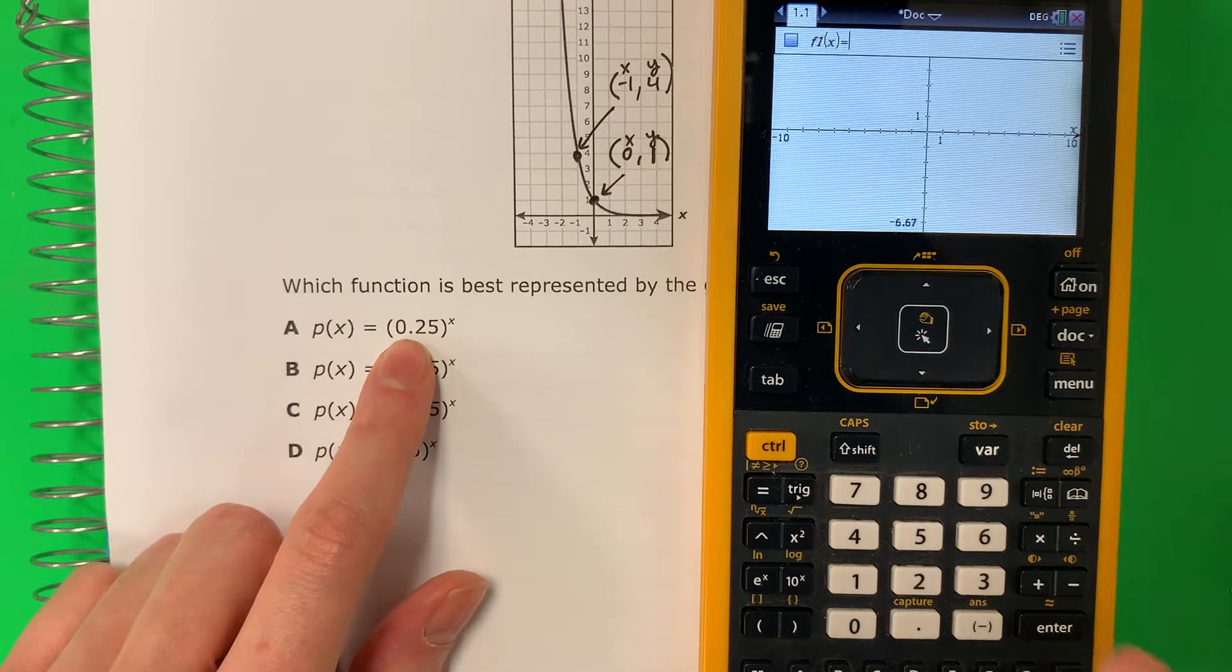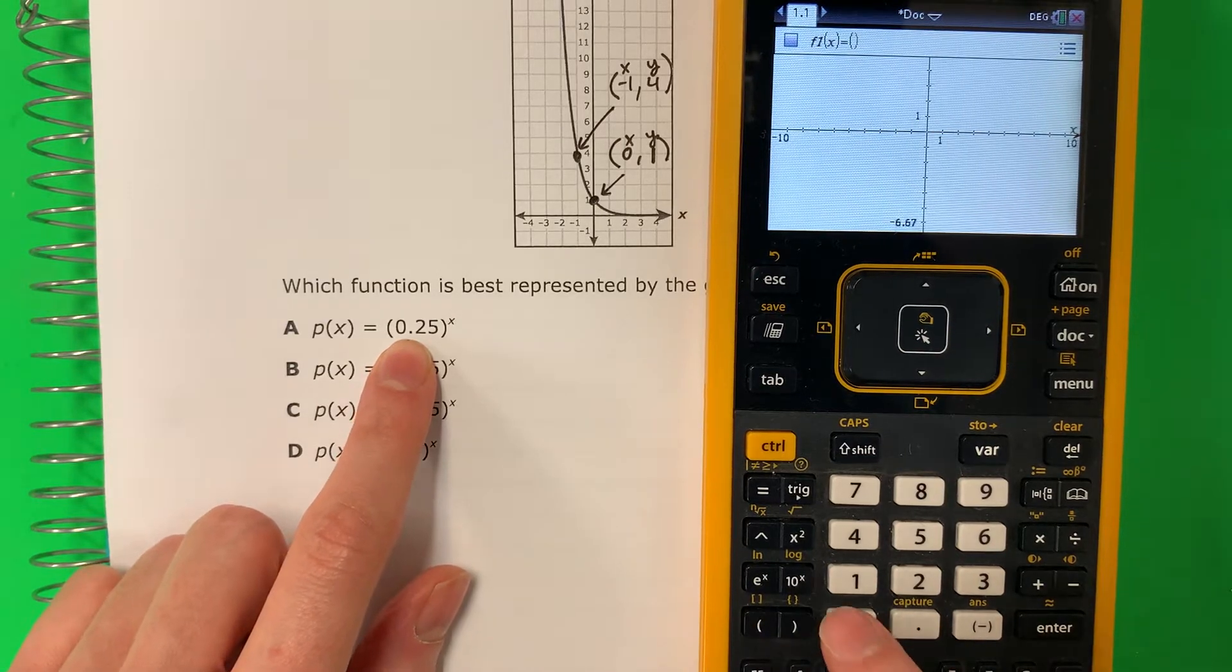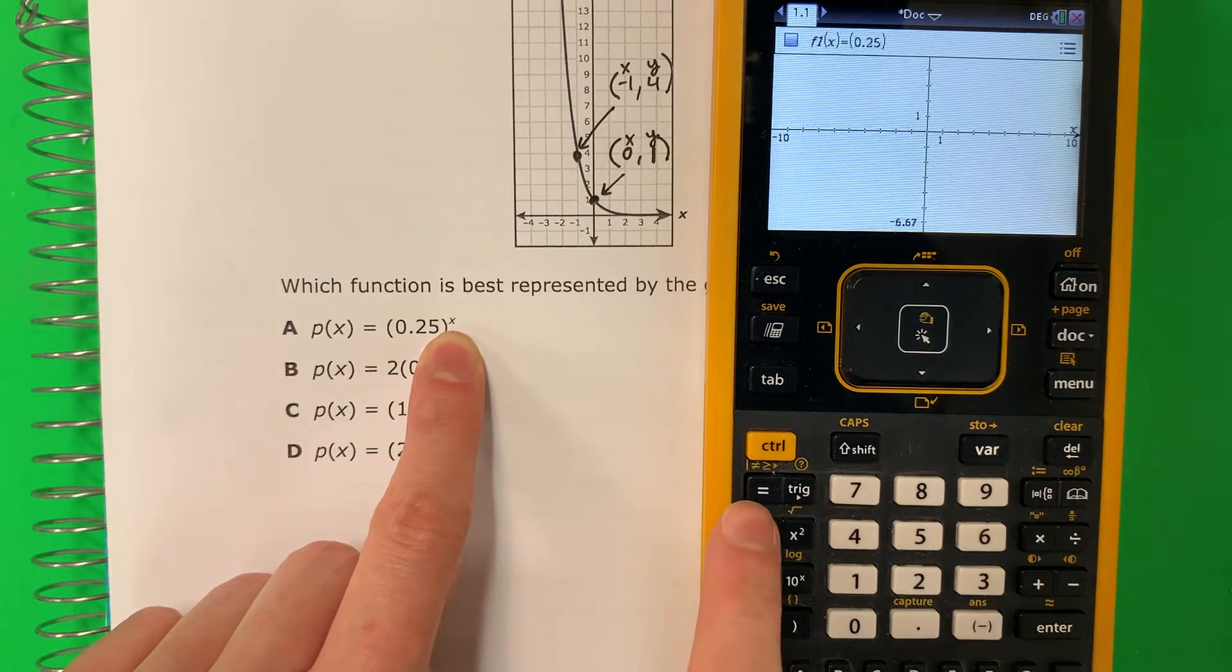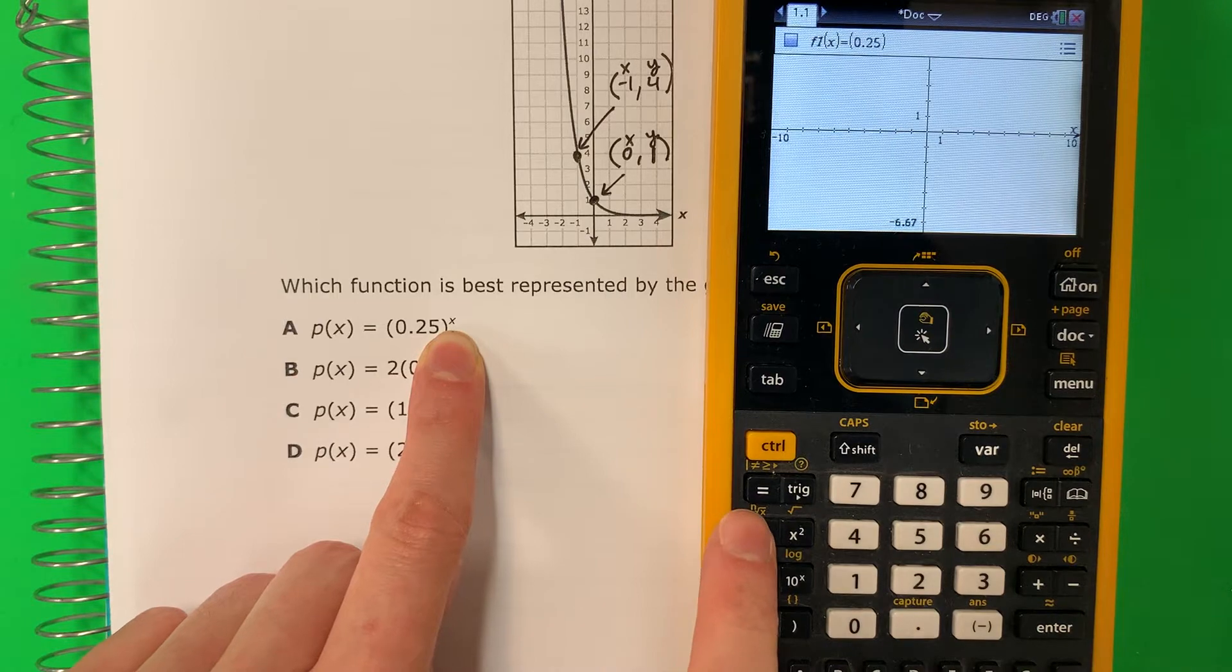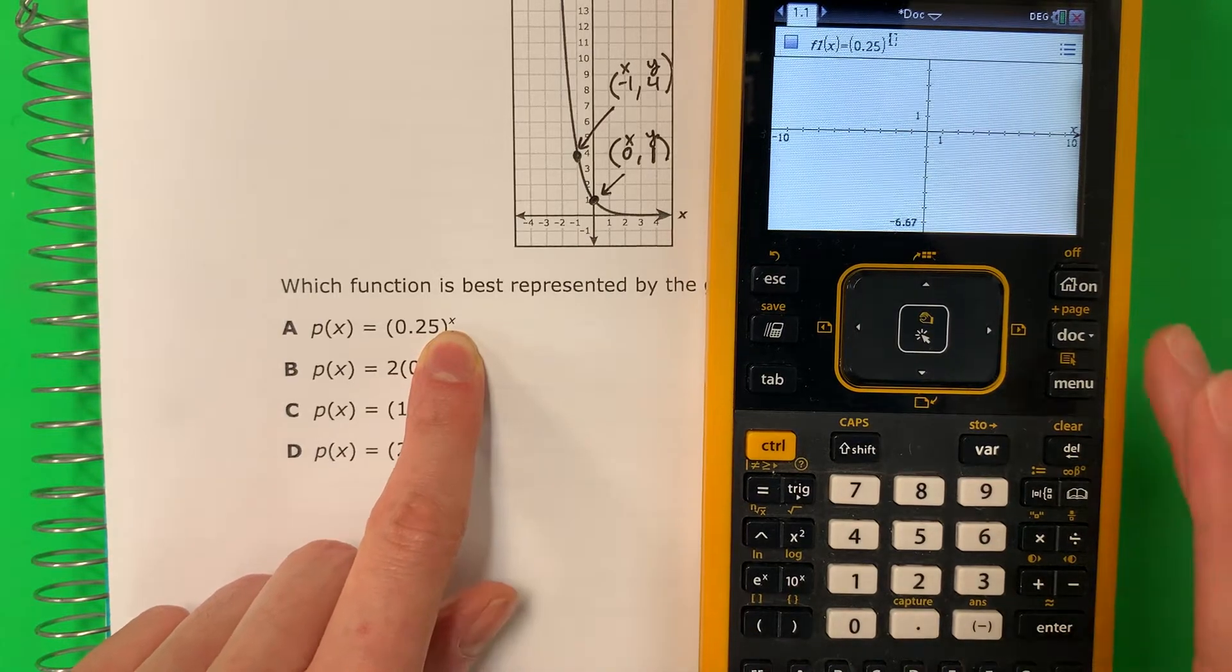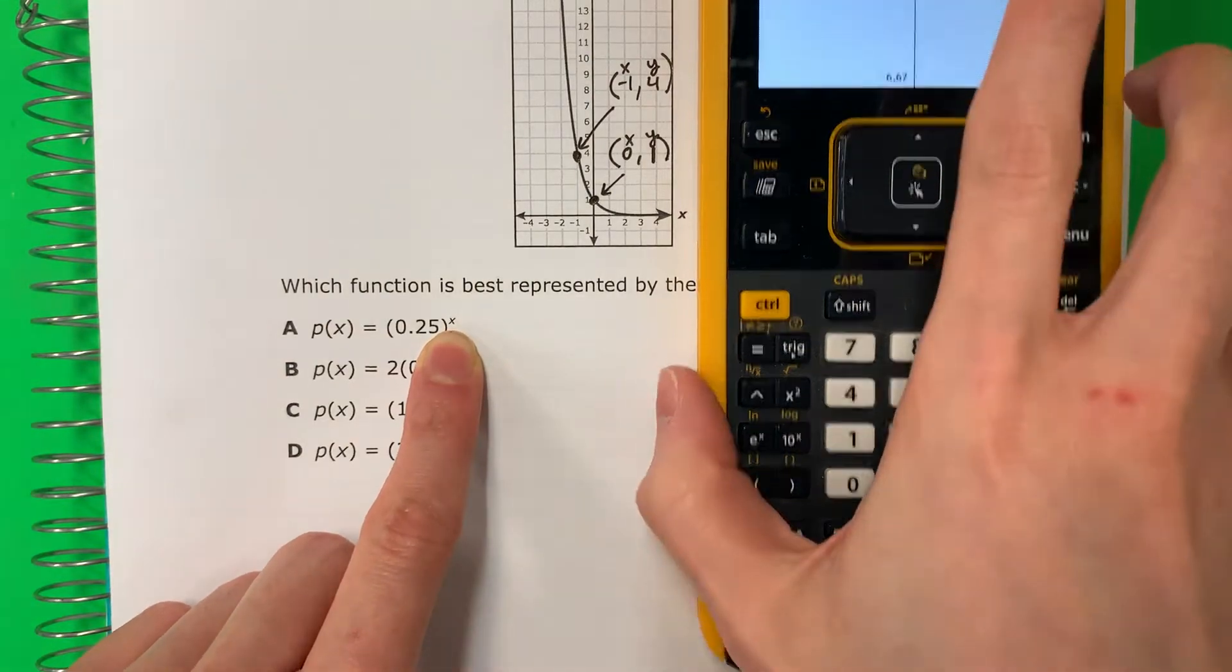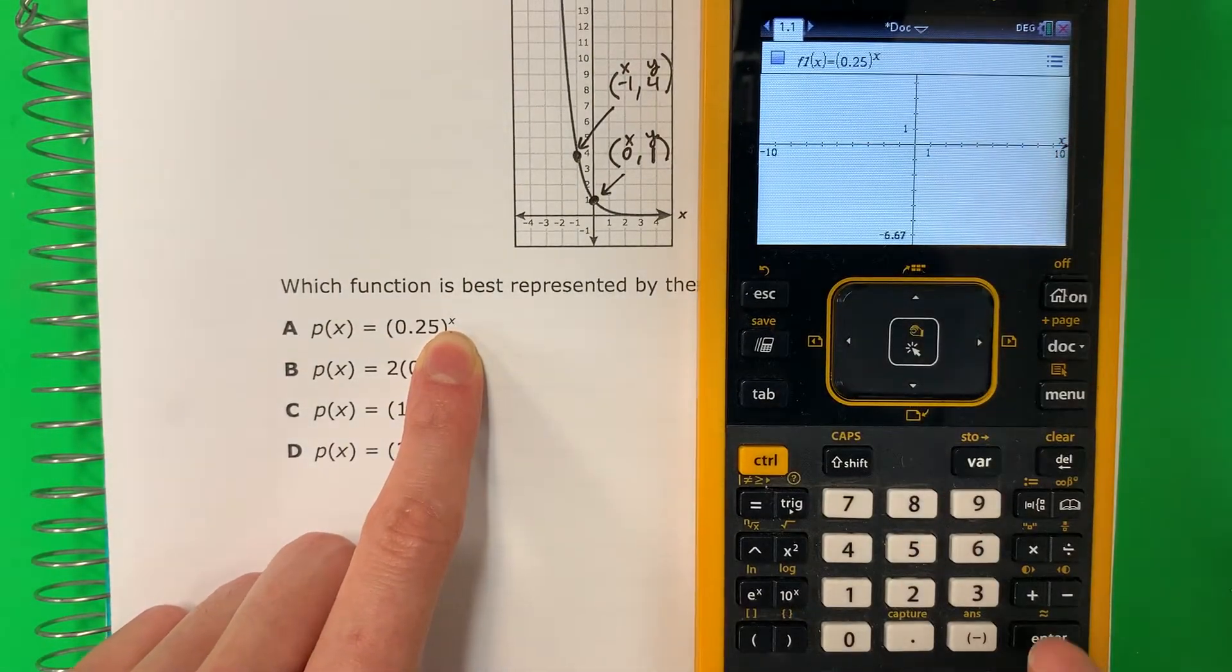And we're going to put the first one. Parenthesis, 0.25, close parenthesis. To make this exponent, I need this button. Push that button and then put X. Push enter.